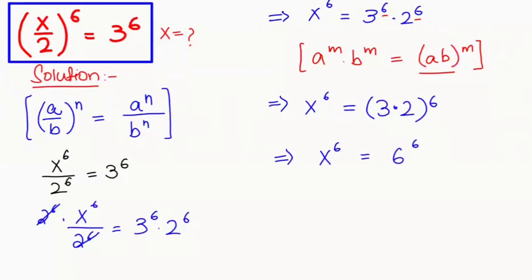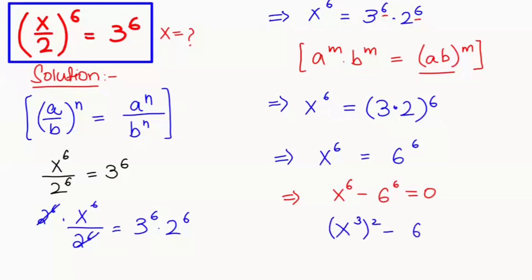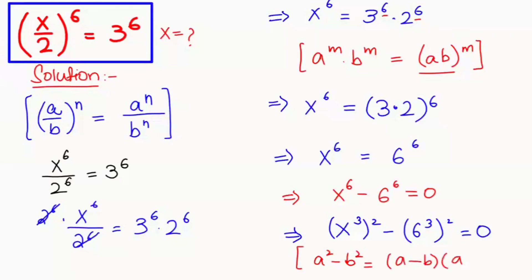Next I will take 6 to the power of 6 to the left-hand side: x to the power of 6 minus 6 to the power of 6 equals 0. I'm going to express this as (x³)² minus (6³)² equals 0, and apply the algebraic identity a² minus b² equals (a minus b)(a plus b).